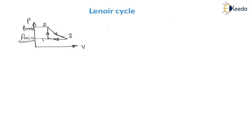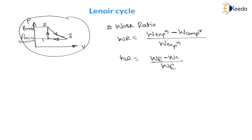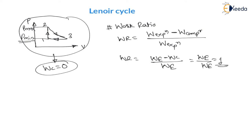Another important term is work ratio, represented by WR. Work ratio is the ratio of (work of expansion − work of compression) to work of expansion. For the Lenoir cycle, there is no compression process, so work of compression is zero. Therefore, work ratio = work of expansion / work of expansion = 1. For the Lenoir cycle, work ratio is unity.